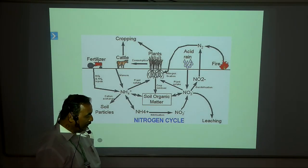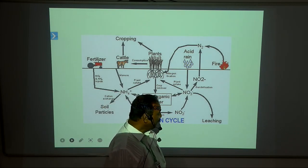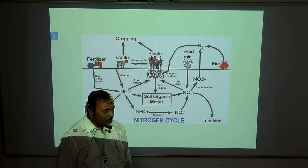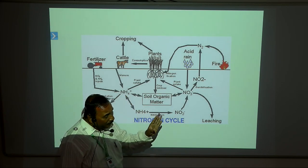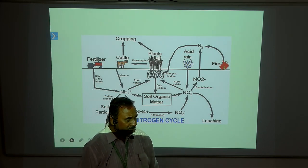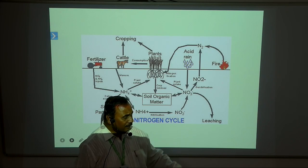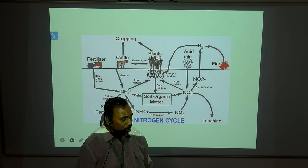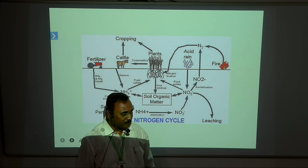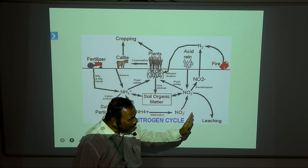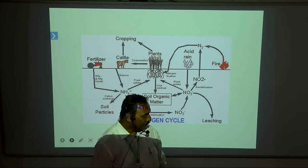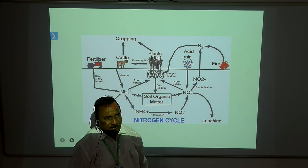Today we will discuss the growth pattern of the plant. The entire growth and development of the plant depends upon mineral elements. There are different types of mineral elements. From entire rock, the smallest particle of soil is produced. This soil contains 46 types of mineral elements, out of which only 16 are essential for plant growth and development, divided into two parts: major elements and minor elements.